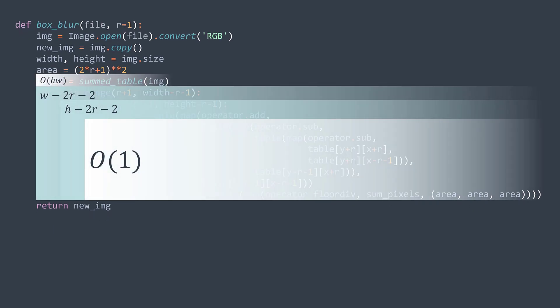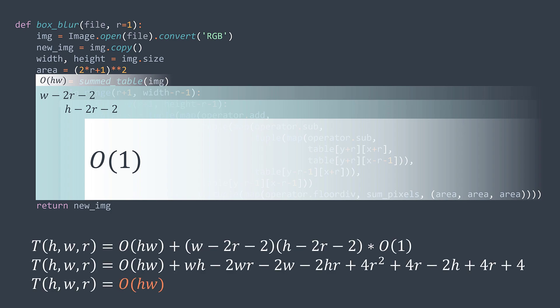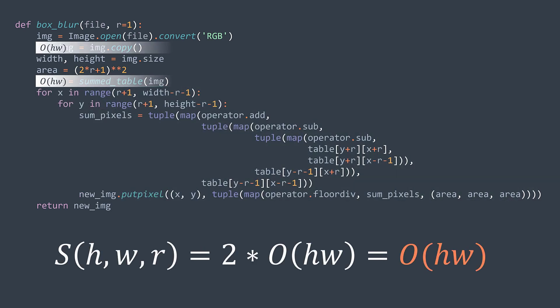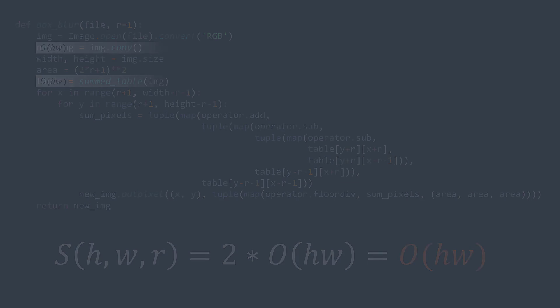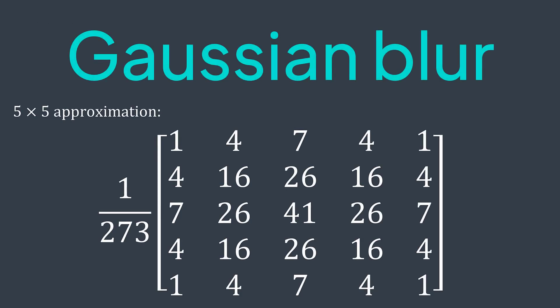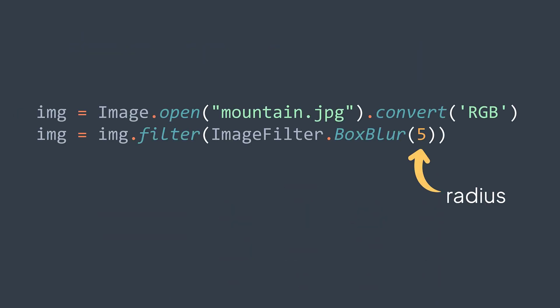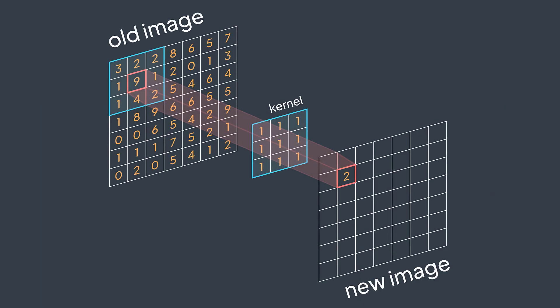For the time complexity: building the summed area table costs O(h×w), and now each iteration costs O(1) — getting the sum in O(1) using the table. So we achieve O(h×w) time complexity overall. For space complexity, we get O(h×w) because of the table and the new image. We're finished learning about box blur. Note there are other types of blur, like Gaussian blur. If you actually need to box blur an image in Python, just use the PIL function, which is faster than the code we've seen — the code is just to understand how it works. I hope you now know how box blur and filters in general work. Like and subscribe if you enjoyed the video, see you in the next one.